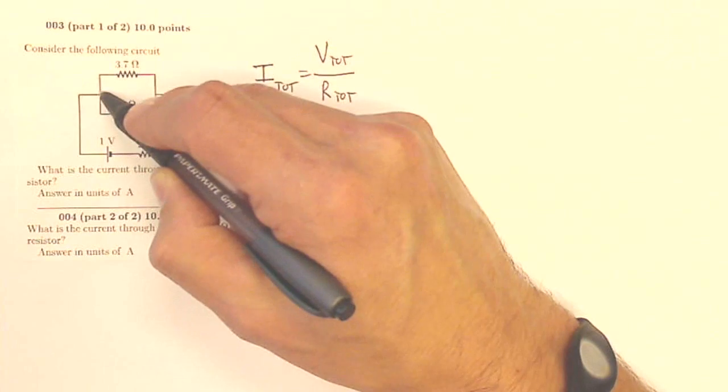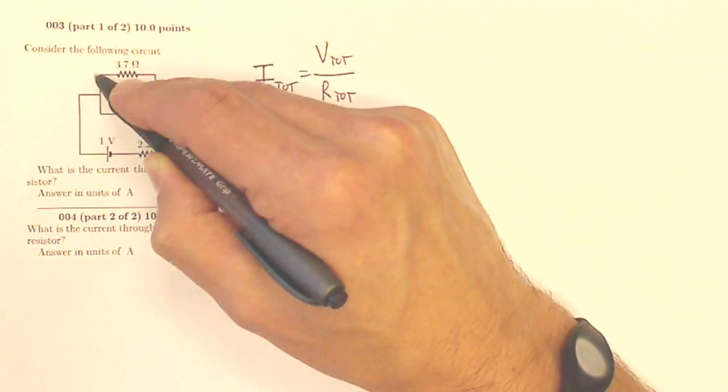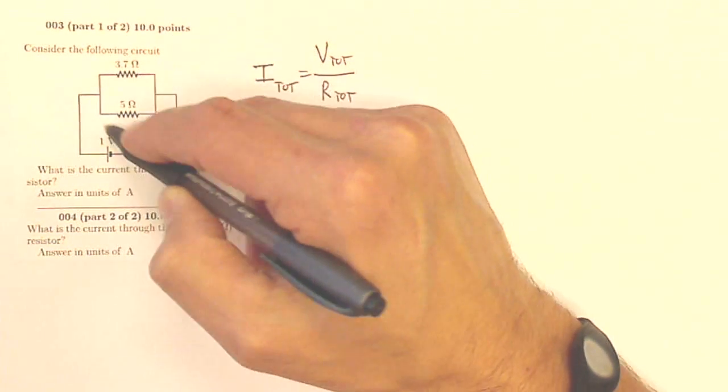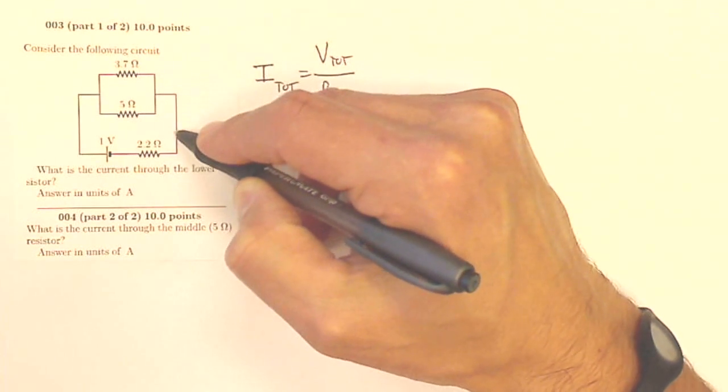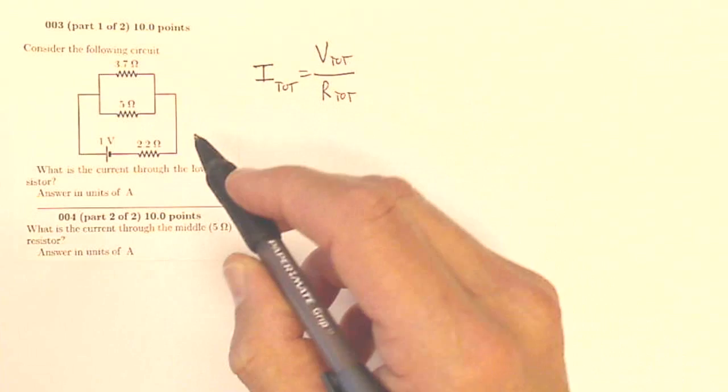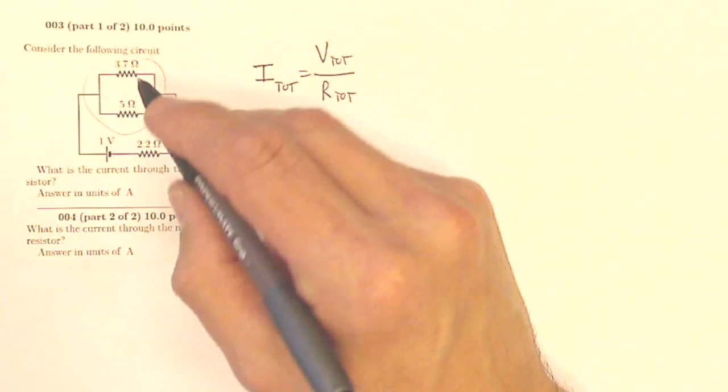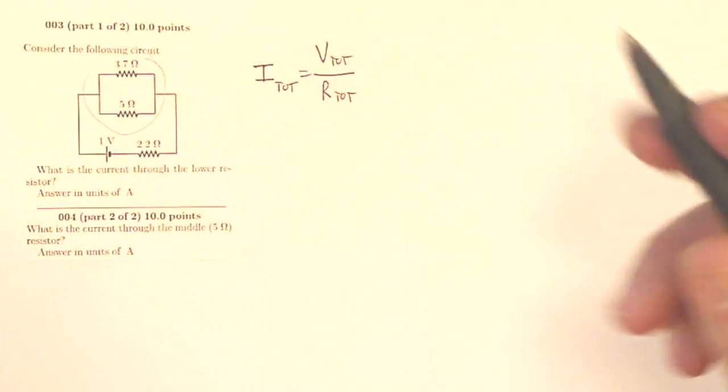Here, the current leaves the battery, then it splits. Some of it goes this way, some of it goes this way. These two are parallel. But then that current comes back together from both those branches, and all of it has to go through this one.